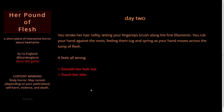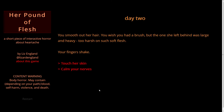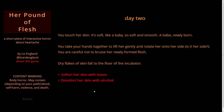Smooth her hair out or touch her skin. Smooth her hair out. You smooth out her hair — you wish you had a brush, but the one she left behind was large and heavy, too harsh on such soft flesh. Your fingers shake. Touch her skin. You touch her skin — it's soft, like a baby, so soft and smooth, newly born. You take your hands together to lift her gently and rotate her onto her side, careful not to bruise her newly formed flesh. Dry flakes of skin fall to the floor of the incubator.